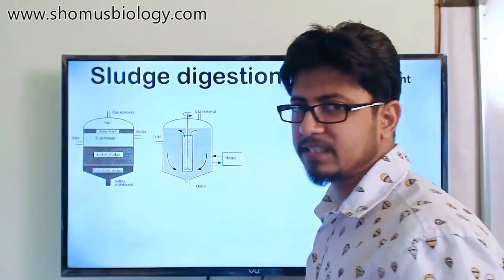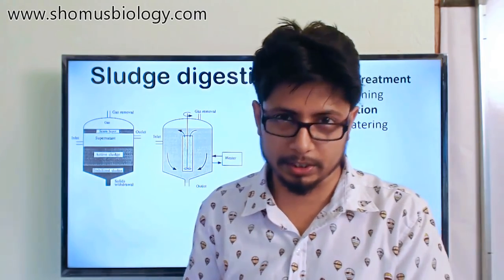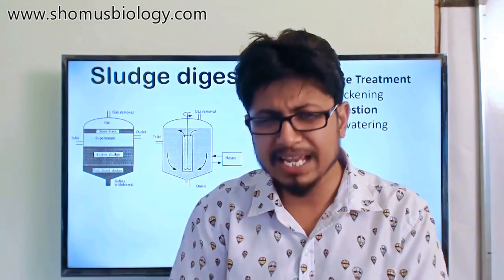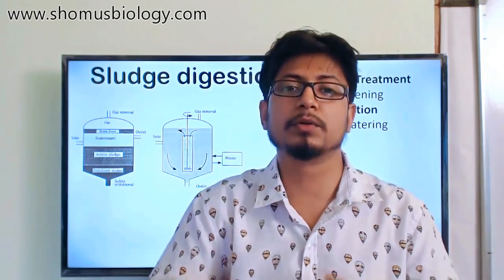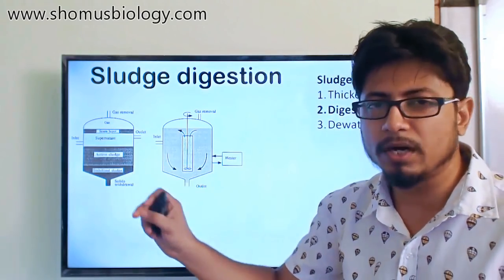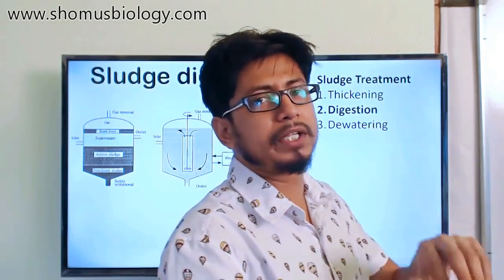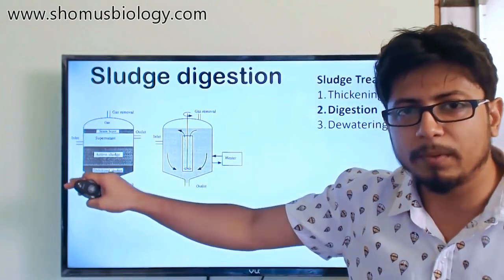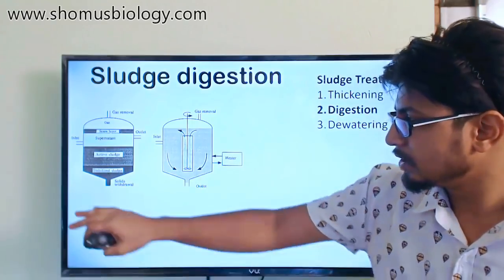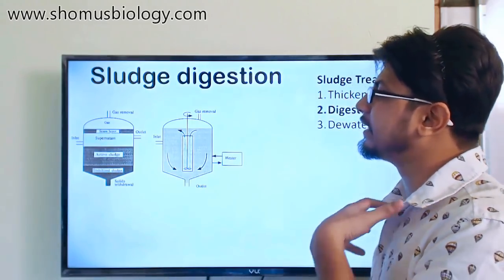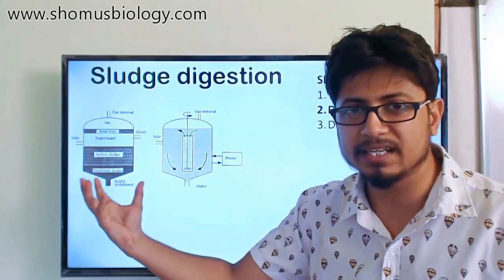Active sludge contains living microorganisms and all the sludgy qualities — it can still provide nutrients to microbes in wastewater. Stabilized sludge, on the other hand, no longer contains living microorganisms, and its chemical properties have been modified so it can no longer provide nutrients to support microbial growth in secondary treatment. The goal of the digestion chamber is to convert as much sludge as possible into stabilized sludge.